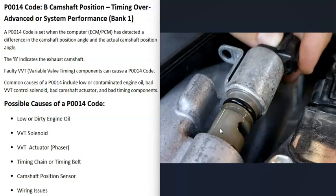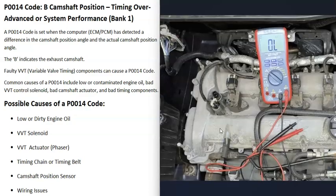The next possible cause is a bad variable valve timing solenoid on bank one, camshaft B. If you have a multimeter, you can test the solenoid — all these solenoids have a rated ohms value. Look up the rated ohms for your specific vehicle's VVT solenoids and check whether they fall within that range. If they don't, or if the reading is open, the solenoid is bad.